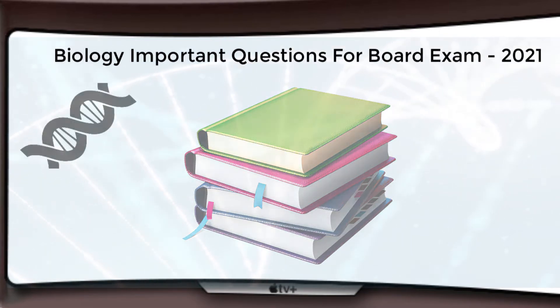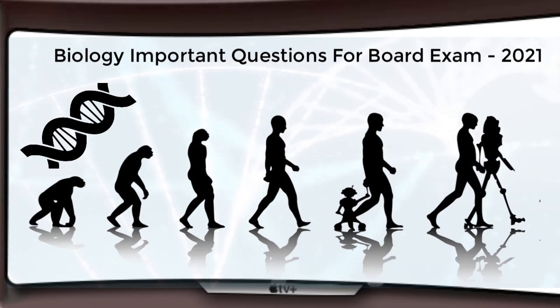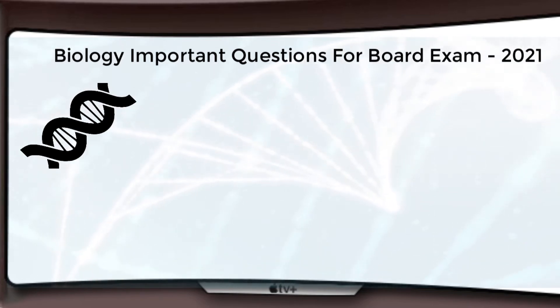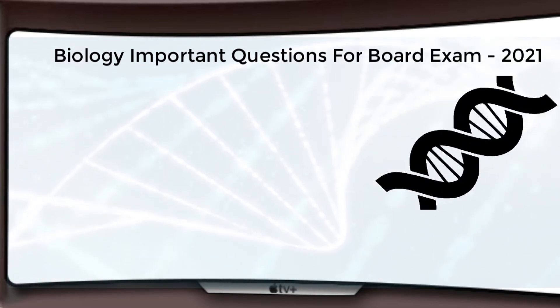In the second unit, the name of the unit is genetics and evolution, but unfortunately evolution is not in the syllabus right now—it is deleted. So it becomes only genetics. In genetics we are having two chapters, students.